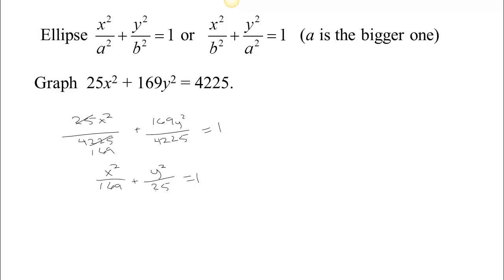Now the way we can graph an ellipse is to think about what happens when either one of the variables is equal to 0. So let's start off by saying suppose that the y value is equal to 0. If the y value equals 0, then we have x squared over 169 equals 1. So that tells you that x squared equals 169, so x equals plus or minus 13. So we have two points on our ellipse at minus 13 and plus 13. Also, if we set x equal to 0, then we'd be on the y axis. If we set x equal to 0, we have y squared over 25 equals 1. So y squared equals 25, so y equals plus or minus 5.